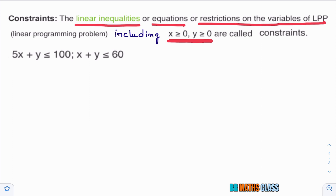So what is the definition of constraints? The linear inequalities or equations or restrictions on the variables of linear programming problems, including x ≥ 0, y ≥ 0, are called constraints. I hope you understand this.